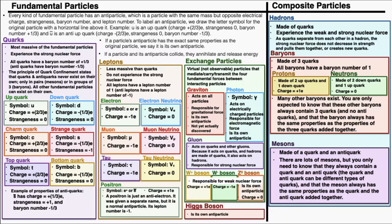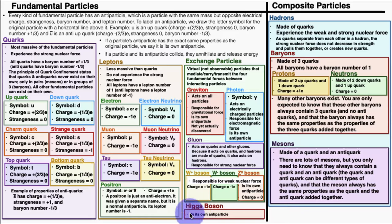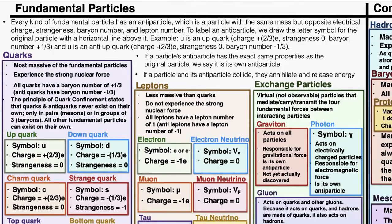This is a chart of everything IB physics students are expected to know about fundamental particles, as well as some information about composite particles. Fundamental particles are shown on the left and composite particles on the right. The four main types of fundamental particles are: quarks in purple, leptons in yellow, exchange particles in green, and the Higgs boson at the bottom right. All the composite particles we'll worry about are called hadrons, grouped into two subcategories: baryons and mesons.